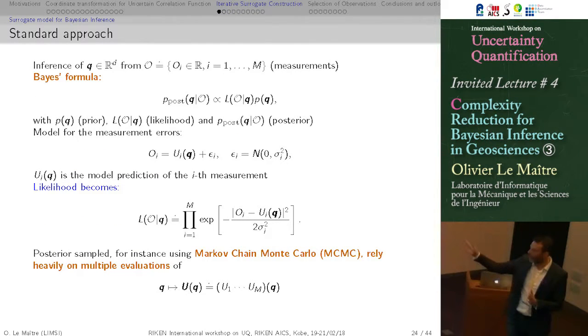Just what I have said before, I'm slightly simplifying the problem to return to the original formulation. And what we want to do is to build polynomial expansions for this model prediction, ui of q, in order to really speed up the evaluation of the likelihood and perform sampling by Monte Carlo-Markov chain.